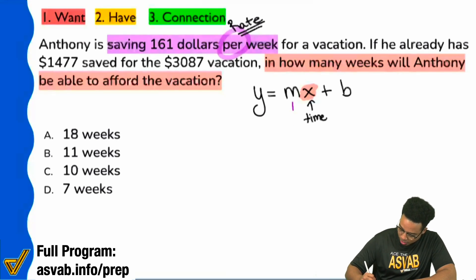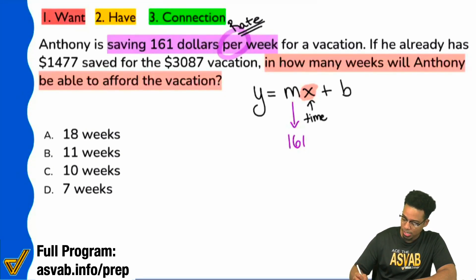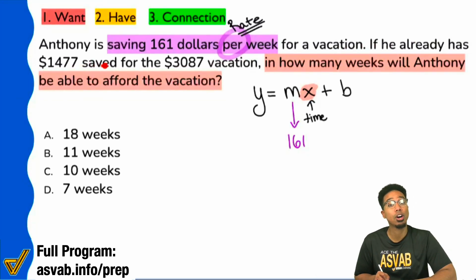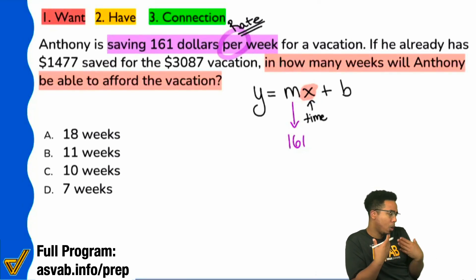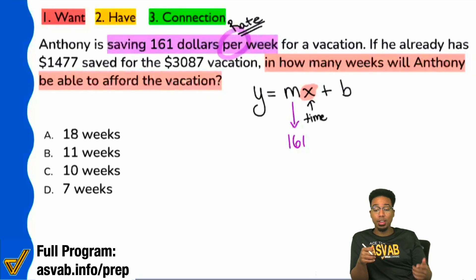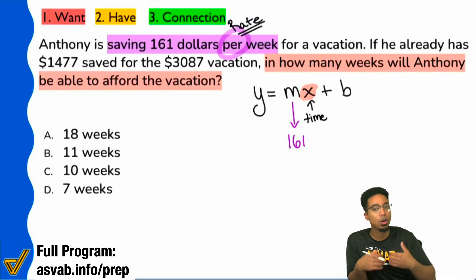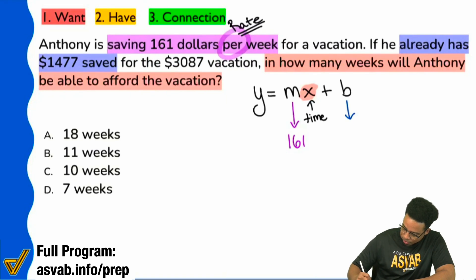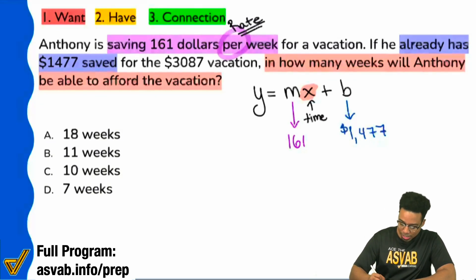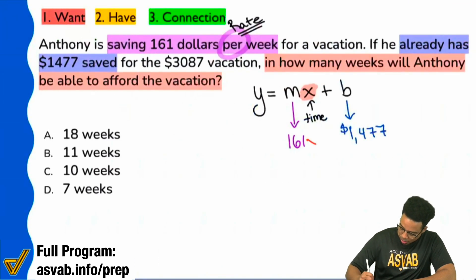Next up, we are going to take a look right over here that it says he already has $1,477 saved. If you already have something, is that going to be what's in the beginning or what's in the end? If you already have this, that's the beginning. Anthony already has $1,477 saved up — already has it at the start of the problem. That's a beginning amount, that's what we initially have. So right here, already has this much saved, and we can write that right over here: $1,477. So far, before I continue, everyone, is this making sense so far?